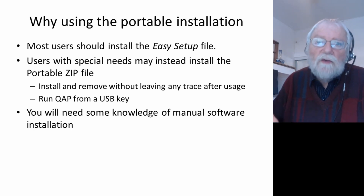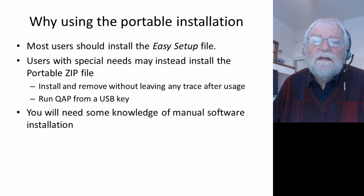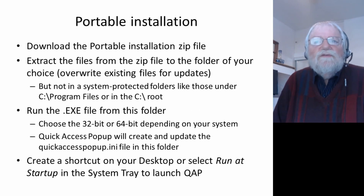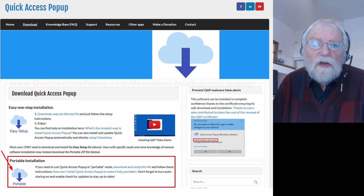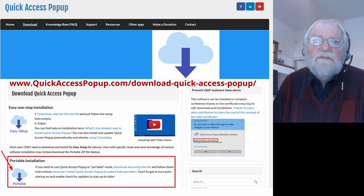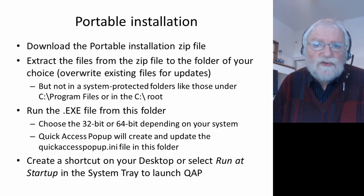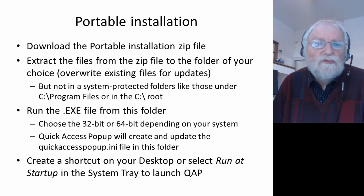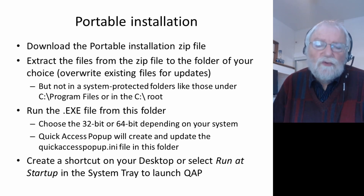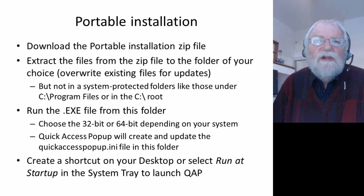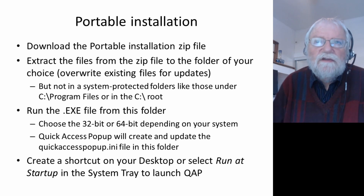To install Quick Access Pop-up portable you will need some basic knowledge, at least how to unzip a file. Download not the easy setup file but the second link called 'portable zip.' It will download a zip file and you extract the content into a folder of your choice — any folder except some protected ones. For example, the C root drive and folders under C:\Program Files are protected and programs installed there may not work correctly. Any other folder, even My Documents, will work.